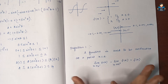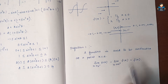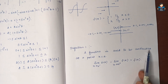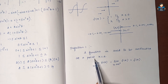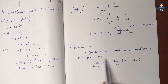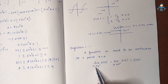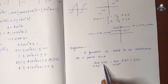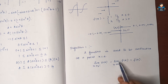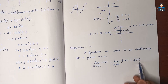Mathematically, a function is said to be continuous at the point x = a if: limit as x tends to a minus of f(x) equals limit as x tends to a plus of f(x), and that equals f(a).